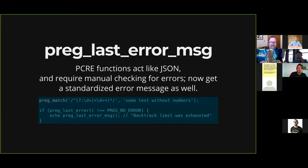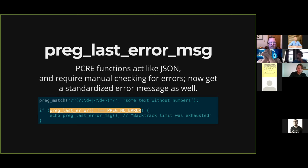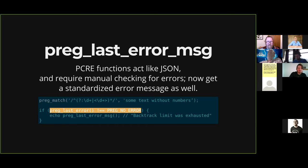The next one I find interesting is preg_last_error_msg. A lot of people aren't aware that preg_match and preg_replace will return errors. Before, similar to what we had to do with JSON before json_last_error_msg, we had to map constants to string messages to report errors, and different libraries would do it differently. Now, just like json_last_error_msg gave us better JSON error reporting, preg_last_error_msg does the same for regex errors. All you have to do is echo preg_last_error_msg. I'm really hoping this will allow us to raise exceptions against this in a future version.